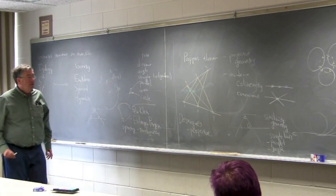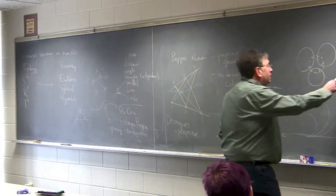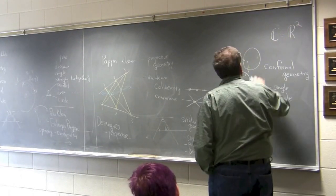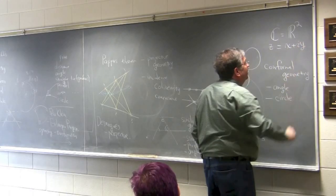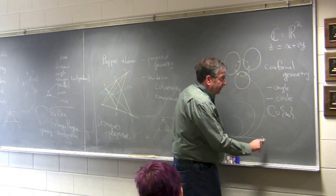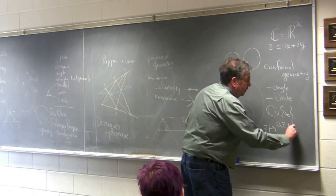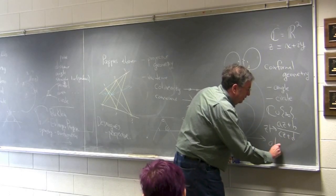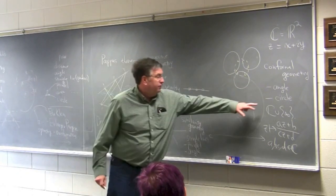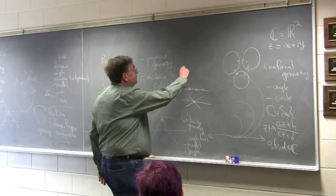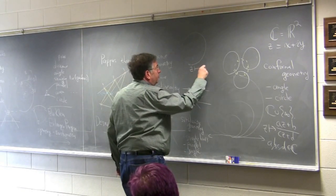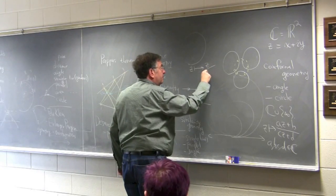Conformal geometry can be understood as follows. We take the complex numbers — which we can think of as pairs of real numbers with a real and imaginary part — and add on a point at infinity. Then a linear fractional transformation, a quotient of two linear transformations (A z + B) / (C z + D) where A, B, C, D are complex numbers, will be a transformation that preserves angles and circles.